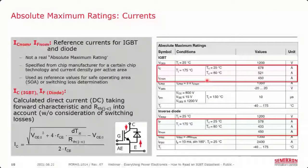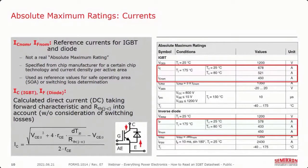The nominal current, ICNOM or IFNOM in the case of the diode, refers to the direct current rating of all the paralleled IGBT or diode chips that make up a single switch. This value is carried over from the chip-level data sheet. For example, in the case of this 450-amp module, three 150-amp ICNOM chips are paralleled to give us that 450-amp value.